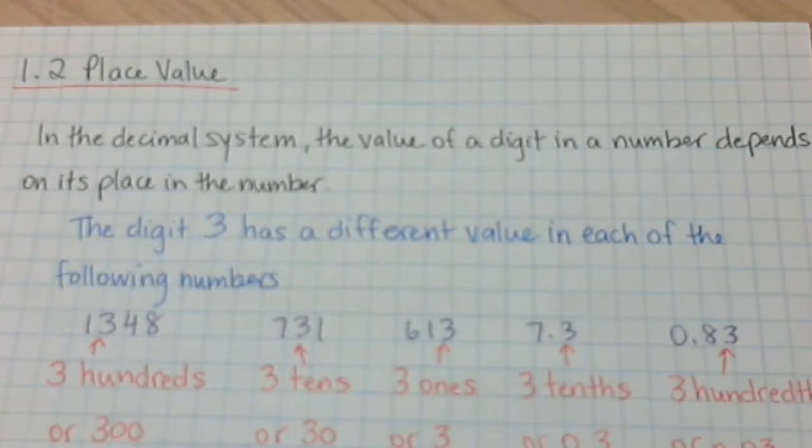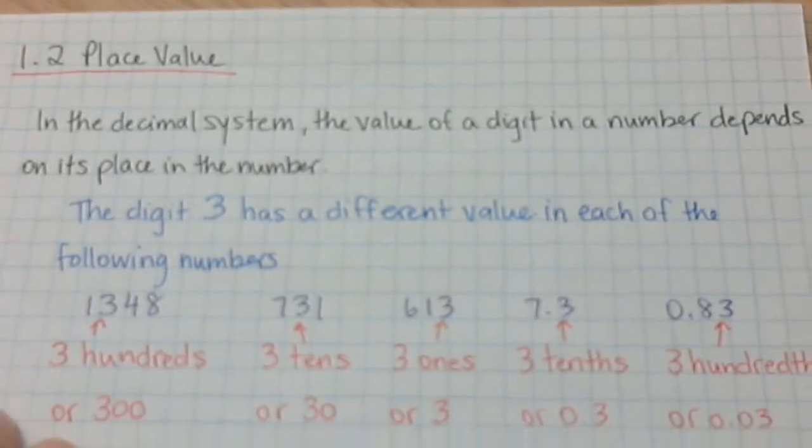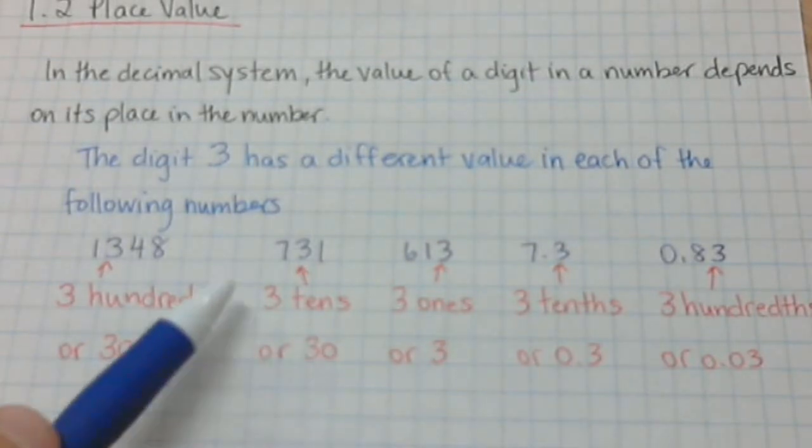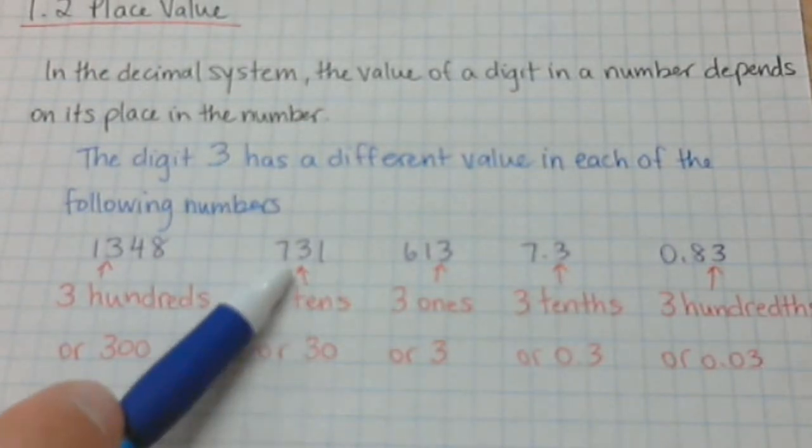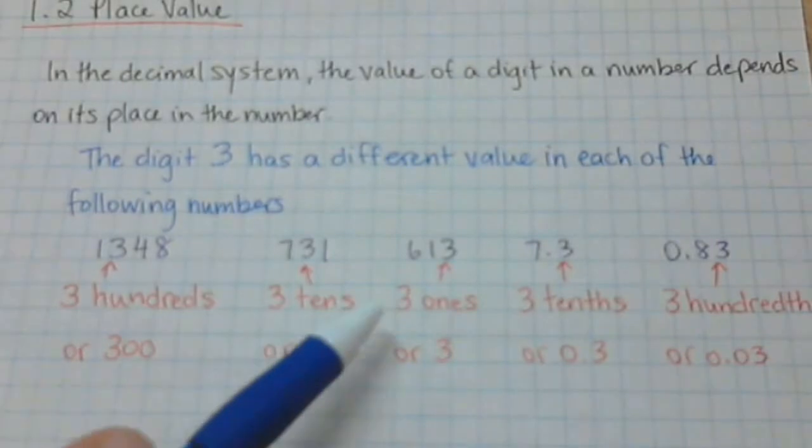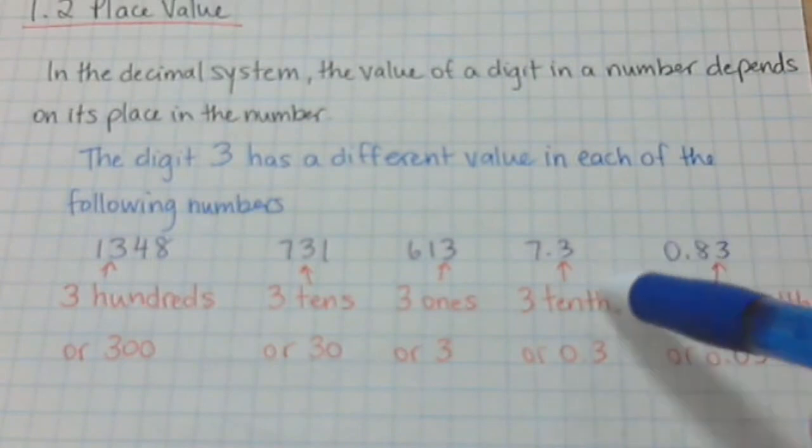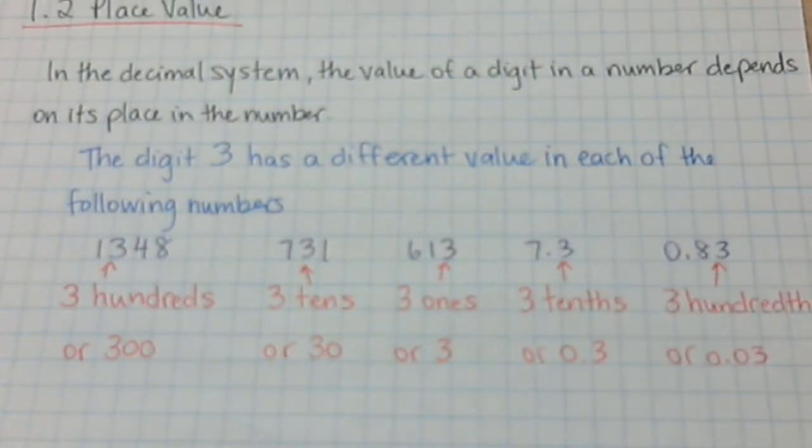In the decimal system, which is what we use, the value of a digit in a number depends on its place in the number. So the digit 3 has a different value in each of the following numbers. There's the number 1348, the value of the three is three hundred or 300. This number 731, the three is thirty. Here it's three ones or three, and here it's three tenths, and here's three hundredths. So the value of three changes from number to number.